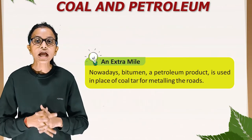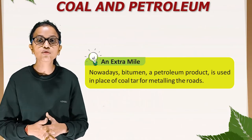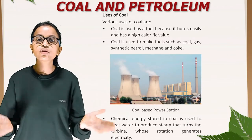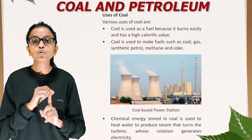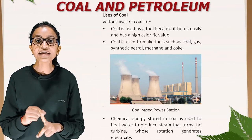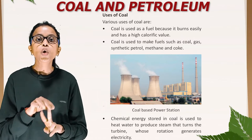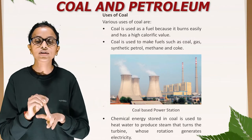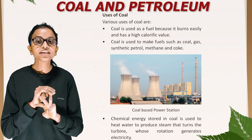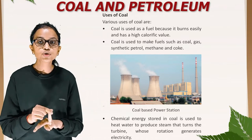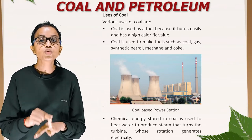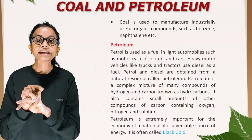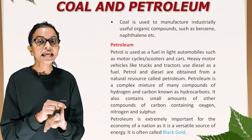Nowadays, bitumen — a petroleum product — is used in place of coal tar for metalling the roads. Uses of coal: Coal is used as a fuel because it burns easily and has a high calorific value. Coal is used to make fuels such as coal gas, synthetic petrol, methane and coke. Chemical energy stored in coal is used to heat water to produce steam that turns a turbine, whose rotation generates electricity. Coal is also used to manufacture industrially useful organic compounds such as benzene and naphthalene.